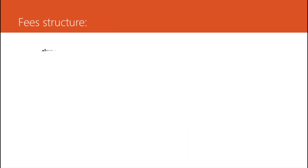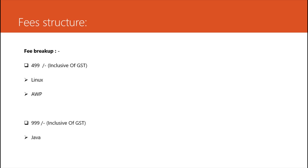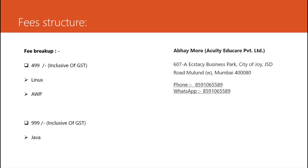The fee structure is very simple: 4.99 rupees is for Linux and AWP, whereas for Enterprise Java, as it is the bigger subject, it will be 9.99 rupees, which is inclusive of JS2. Our company is located in Mulund, and the phone number as well as the WhatsApp number has also been updated.